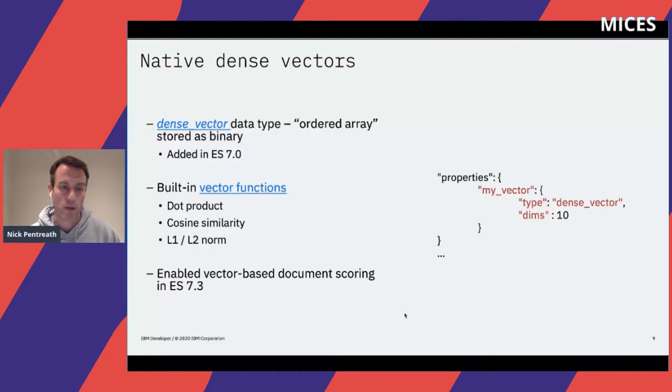This has been solved recently in Elasticsearch 7. A native dense vector type—effectively an ordered array stored as binary—was added in ES 7.0, and then vector functions in 7.3. Built-in vector functions of the type we need for doing things like similarity and scoring, dot products, and cosine similarity. You can see there that we've got a dense vector that we can have as a mapping in our properties, and we just need to specify a dimension.